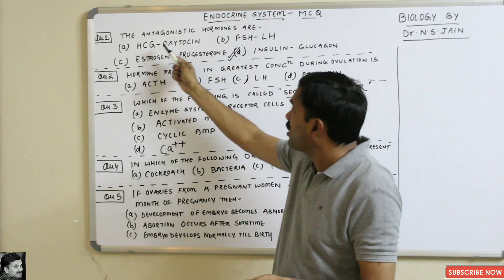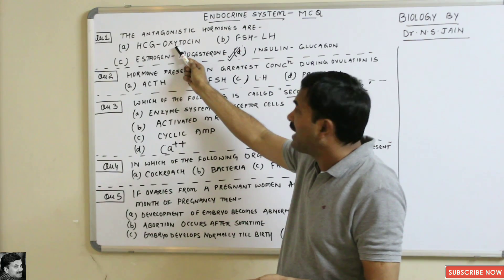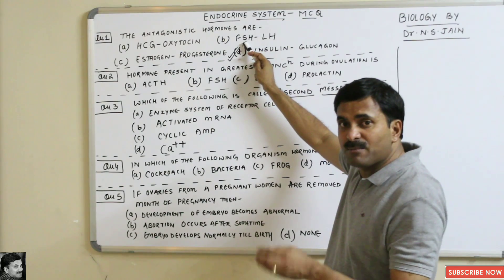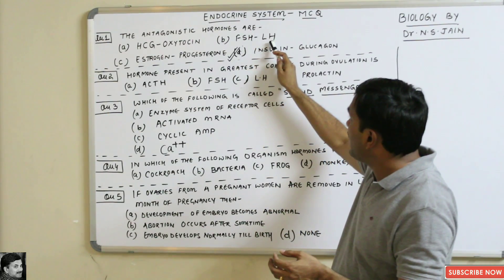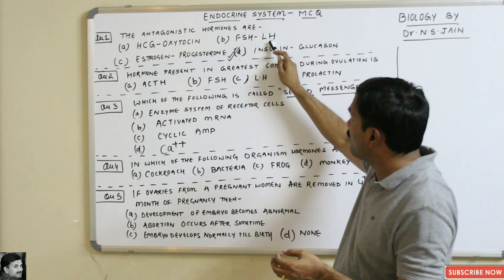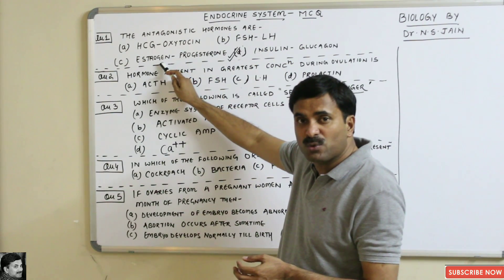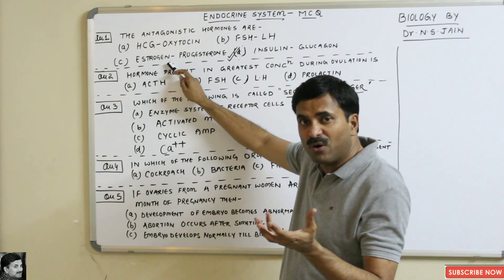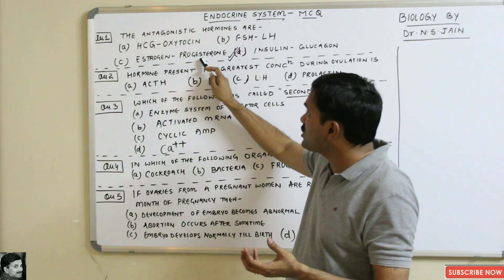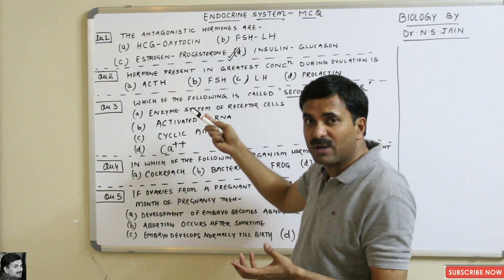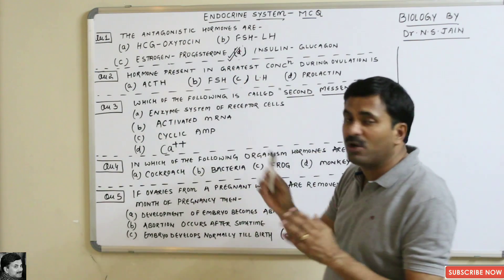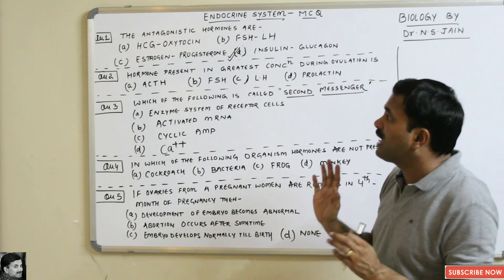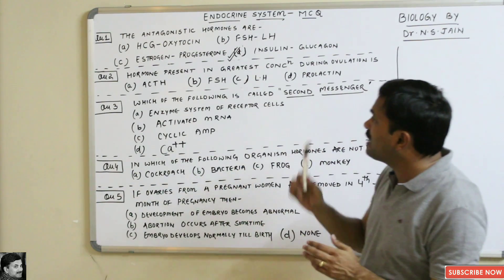All the other hormones are not antagonistic. HCG is released by the placenta and is the pregnancy testing hormone. Oxytocin is released by the pituitary gland and is the milk-releasing hormone. FSH controls spermatogenesis, LH controls ovulation, estrogen controls secondary sexual characteristics in females, and progesterone is the pregnancy-maintaining hormone.